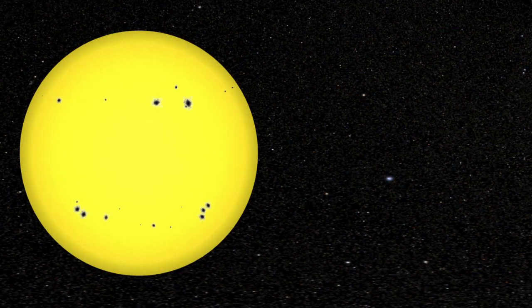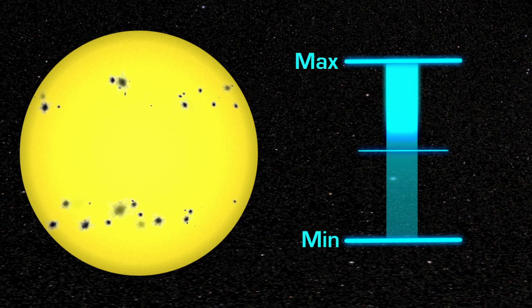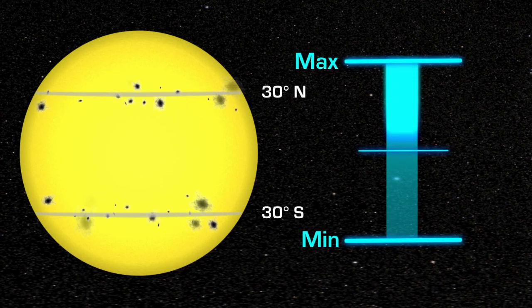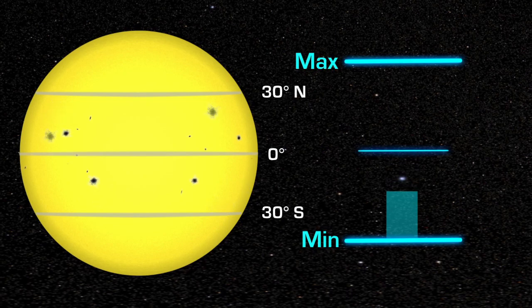During this cycle, the location of the sunspots also changes. They are at middle latitudes during solar maximum and move closer to the equator as the Sun approaches solar minimum.